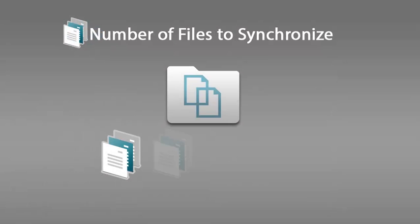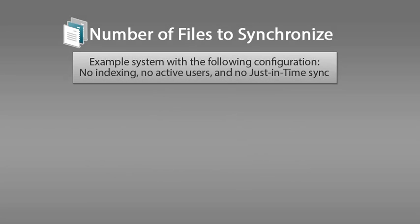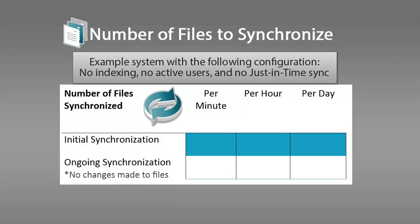The number of files on a given Netfolder for which you perform a full synchronization affects system performance. If you are doing a full synchronization on a given Netfolder, you should understand the amount of time it will take to complete the synchronization. For example, on a Filer test system at Novell, with no indexing, no active users, and no just-in-time synchronization, Filer was able to synchronize files to a Netfolder at the following rate. For the initial synchronization, Filer synchronized 700 files per minute, 42,000 files per hour, and 1,008,000 files per day.